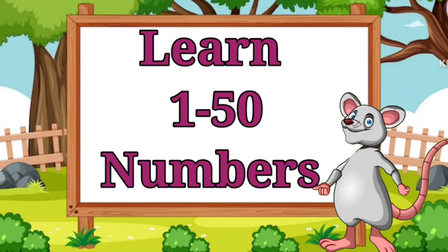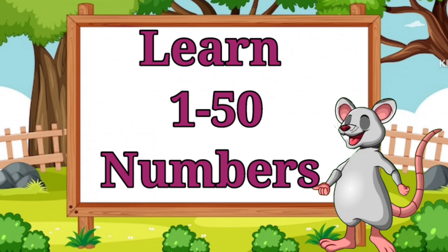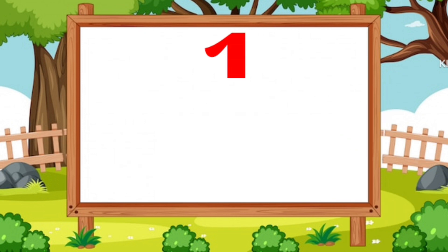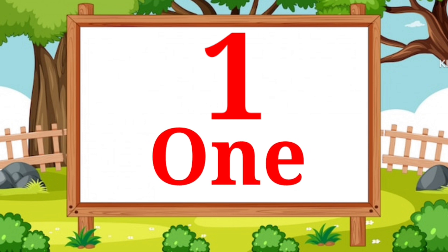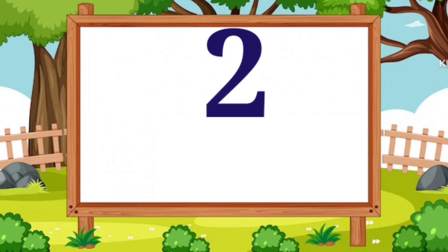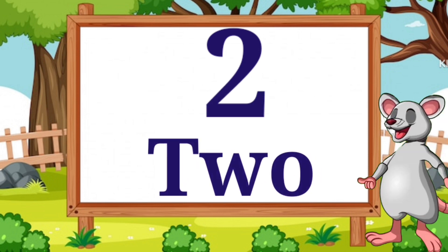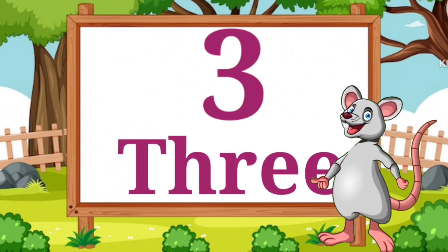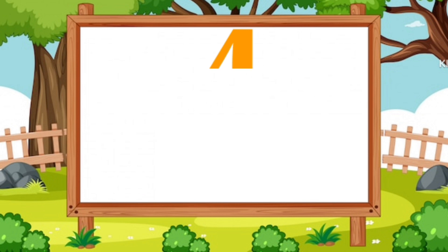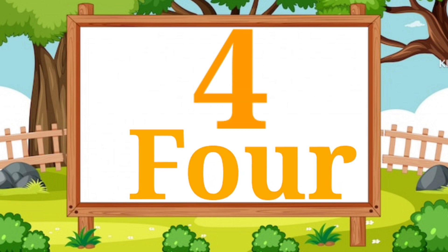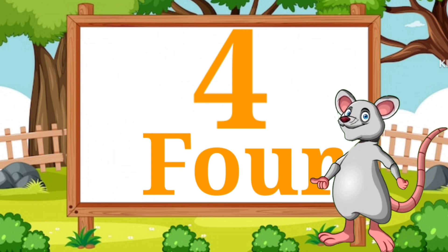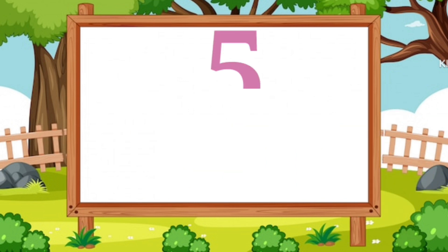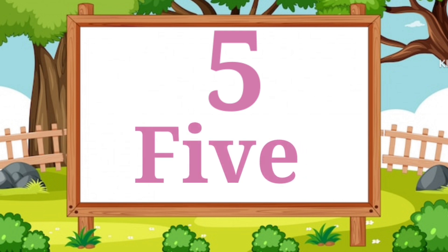Let's learn one to fifty numbers names. One. One. Two. Two. Three. Three. Four. Four. Five. Five.